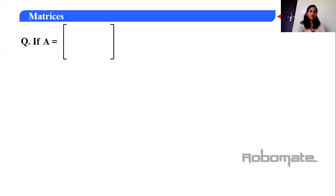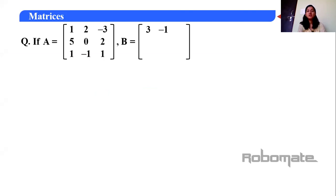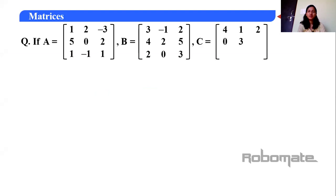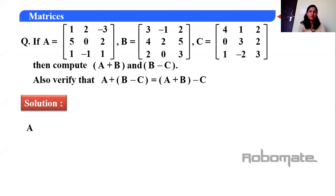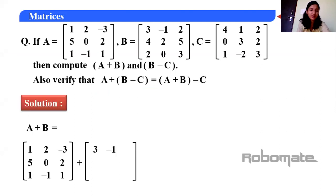Now let's start some questions. Given: A = [[1, 2, -3], [5, 0, 2], [-1, 1, 0]] (3×3), B = [[3, -1, 2], [4, 2, 5], [2, 0, 3]] (3×3), and C = [[4, 1, 2], [0, 3, 2], [1, -2, 3]] (3×3). We have to compute A + B and B - C, and also verify that A + (B - C) = (A + B) - C.